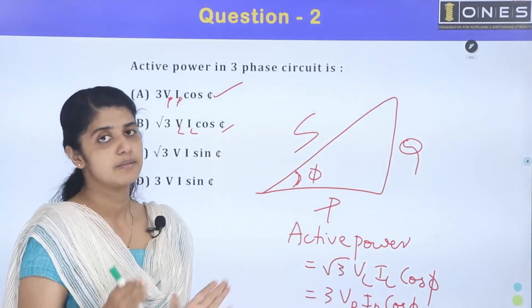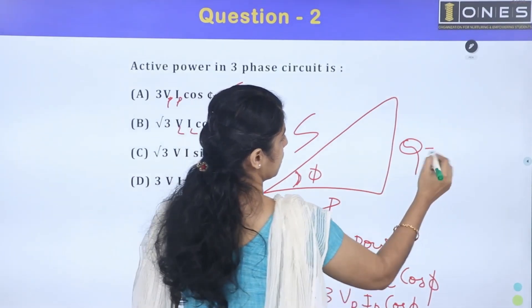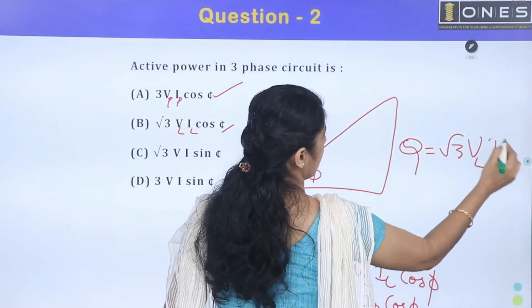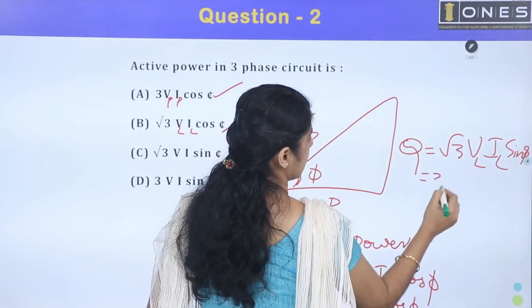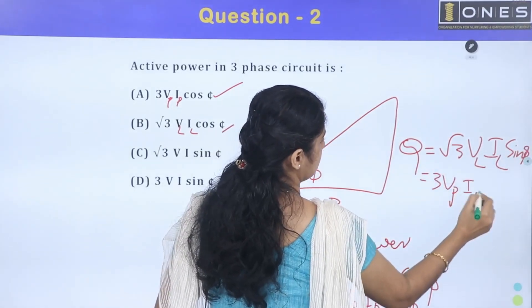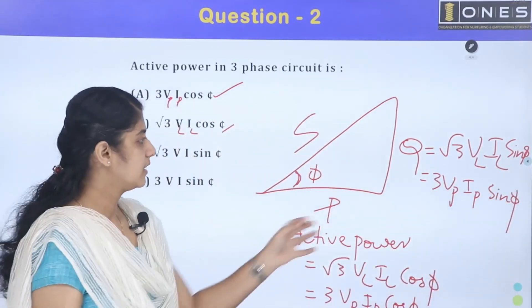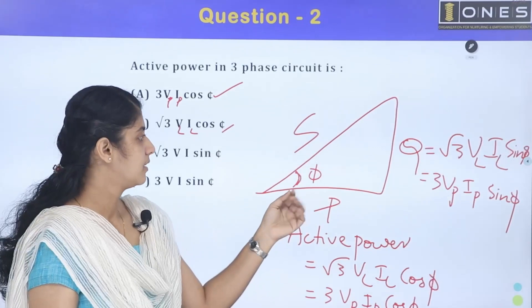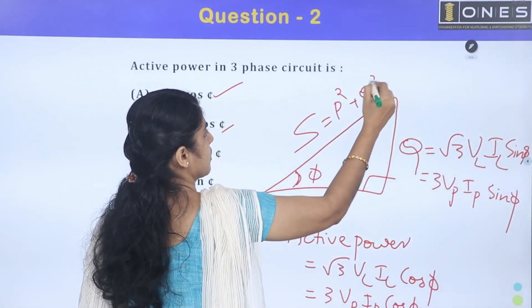For reactive power Q, the formula is root 3 VL IL sin phi. The power triangle shows the relationship between these values.